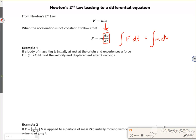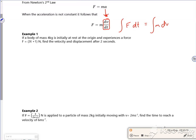So let's look at this question. It says if a body of mass four kilos is initially at rest at the origin and experiences a force of 3t plus 1 newton, so if you look, my force is a function of t, so that's lovely it fits in perfectly. Find the velocity and the displacement after 2 seconds.